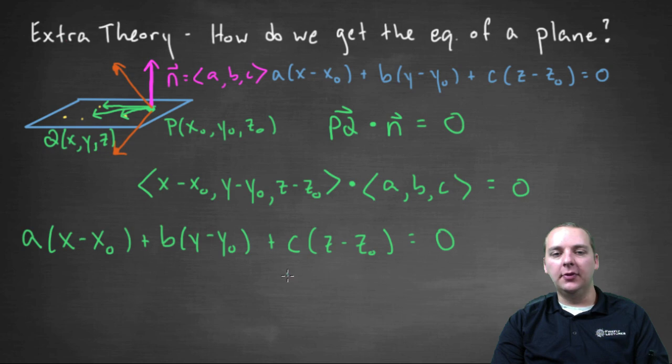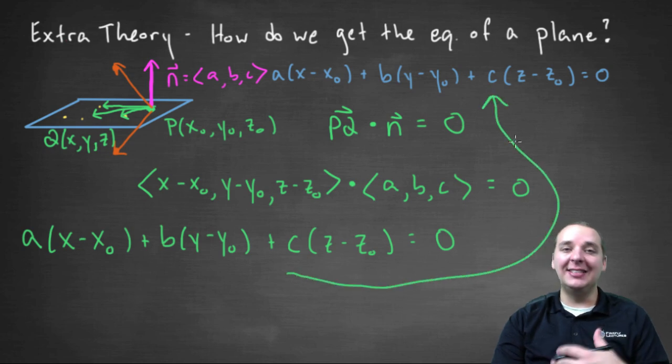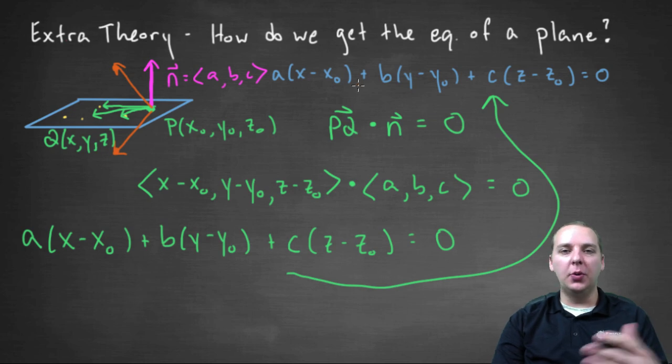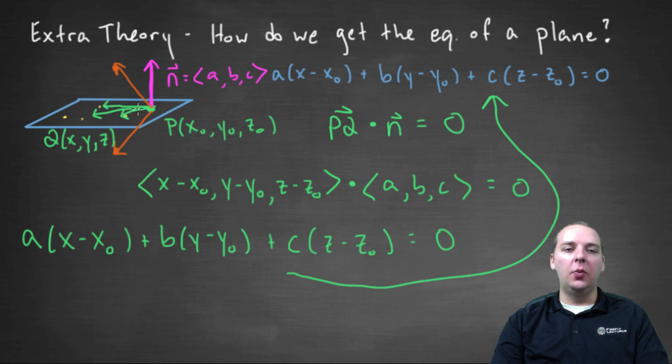And in fact, this should look very familiar. This is our equation of a plane, in standard form. This is where this equation comes from. So hopefully that sheds some light on where this mystery equation comes from. It's actually not a mystery at all, it's just relying on the fact that vectors in the plane will all be orthogonal to the normal vector to the plane. And any other vector from P to a point not in the plane, won't be orthogonal to N.